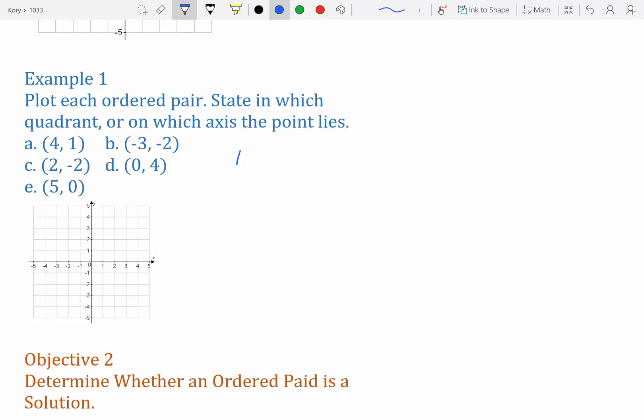So we have 4, 1. That means we have to go 4 on the x and 1 on y. So 4 on x, 1 on y, and here we go. We have our point.